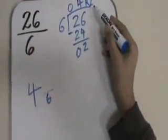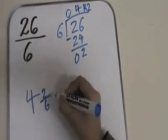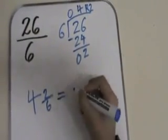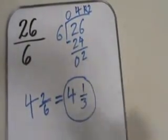And our remainder, 2, is our numerator. We can simplify this way. So it would be 4 and 1 third. That is our answer.